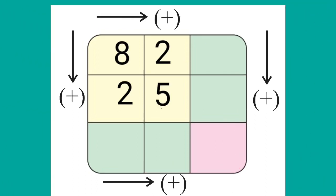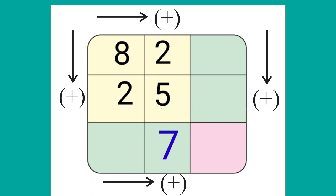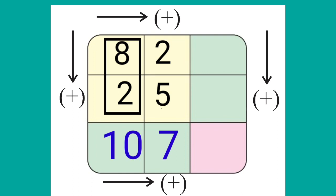Let's solve our second question. In this question, we will add from top to bottom. Look at the right side — we will add 2 plus 5 is equal to 7. Now at the left side, 8 plus 2 is equal to 10.